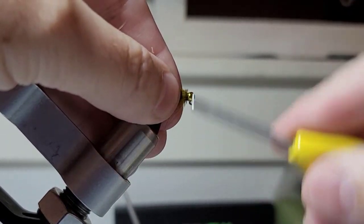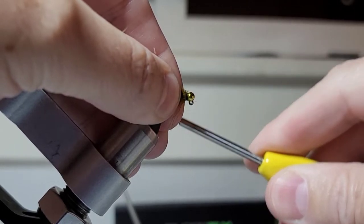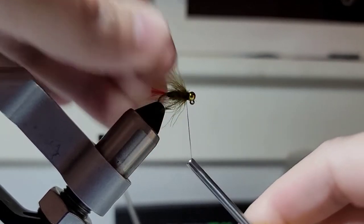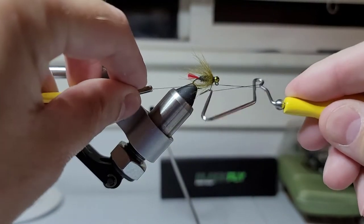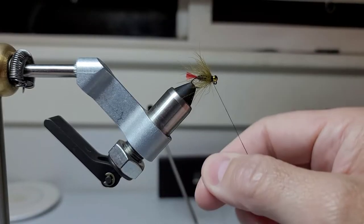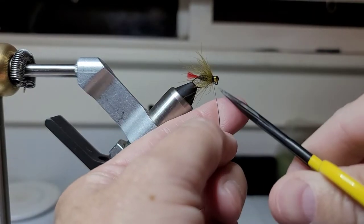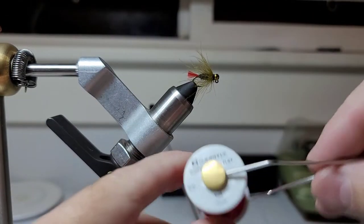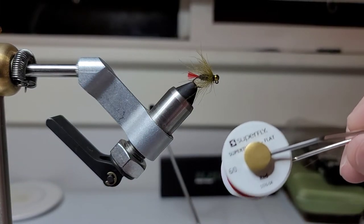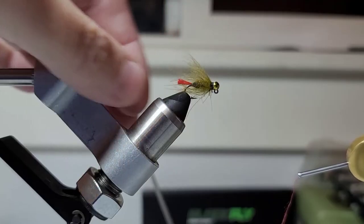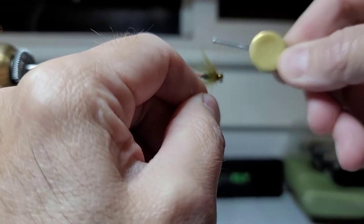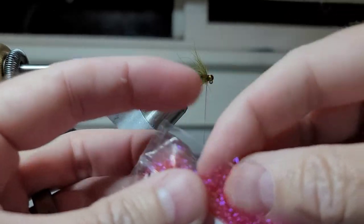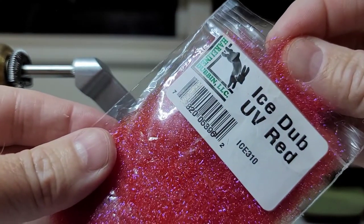So now I'm going to just bring these CDC feathers back and I'm going to tie just a little bit. I'm going to go ahead and whip finish this because we're going to switch threads. Cut this off. I'm going to switch threads to a simple flat, a 6-0 red. Important to keep these fibers preened back.